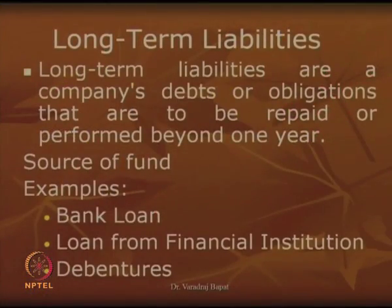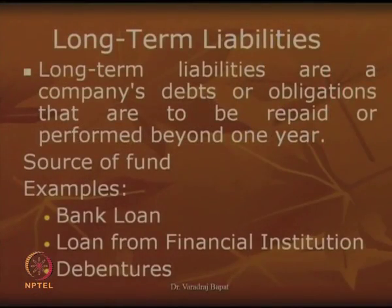If I want to start a plastic manufacturing unit, I approach the bank for say 50 lakhs to start a factory — that is an example of a bank loan. Sometimes instead of approaching a bank, I may approach many people and they give me a loan; in turn I give them a document as proof that I have taken a loan — that is known as a debenture, also an example of a long-term liability. The second type of liabilities are current liabilities — these are obligations payable immediately, that is within a period of one year, and they typically emerge from day-to-day business transactions.